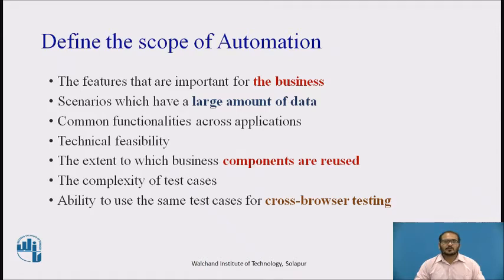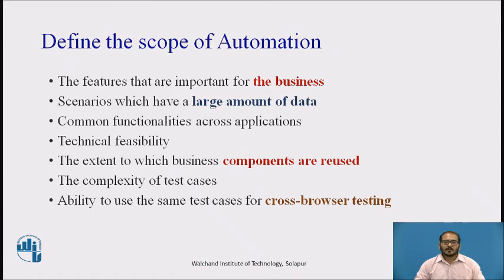Next, define the scope of automation. The scope of automation is the area of your application under test which will be automated. The following points help determine the scope: features that are important for the business, scenarios with large amounts of data, common functionalities across functions, technical feasibility, extent to which business components are reused, complexity of test cases, and ability to use the same test cases for cross-browser testing.